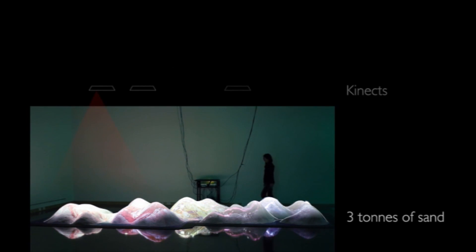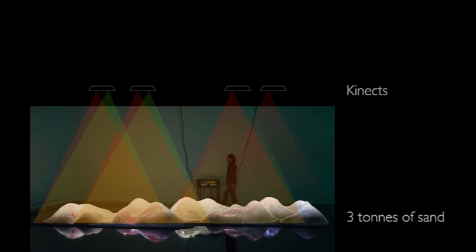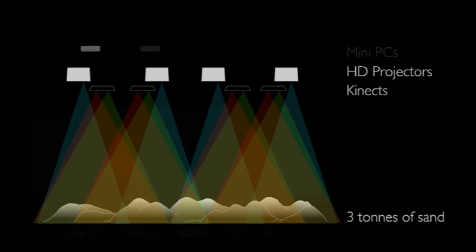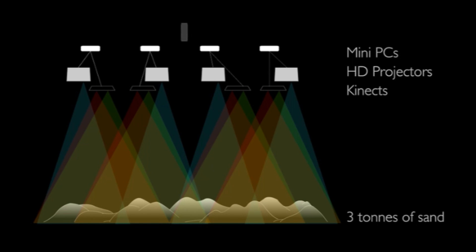The interaction design utilises three-dimensional data from 4 Kinect sensors mounted overhead to identify the real and virtual positions, shadows and movements of the visitors.